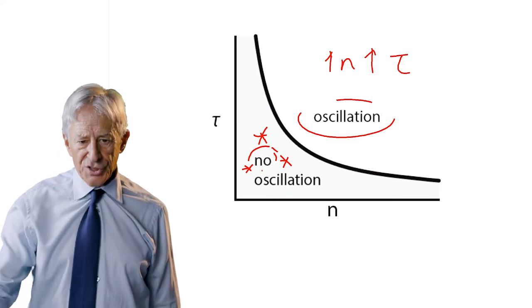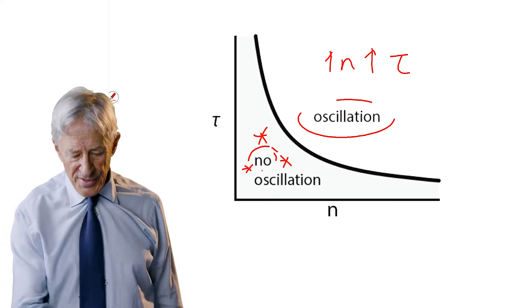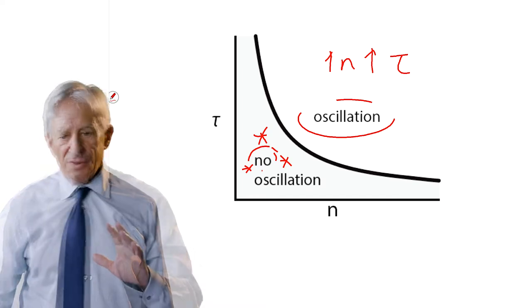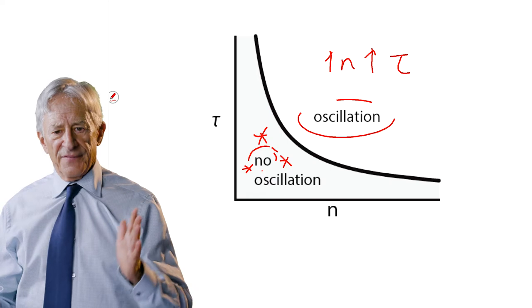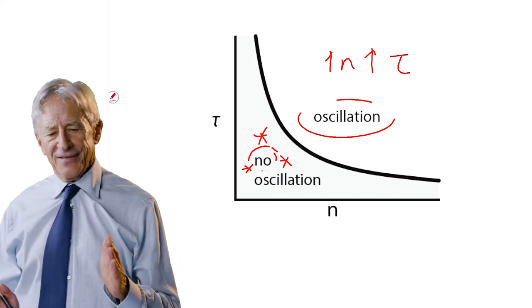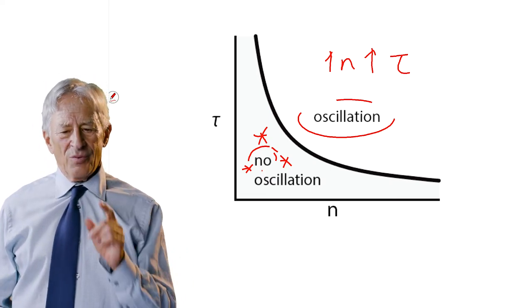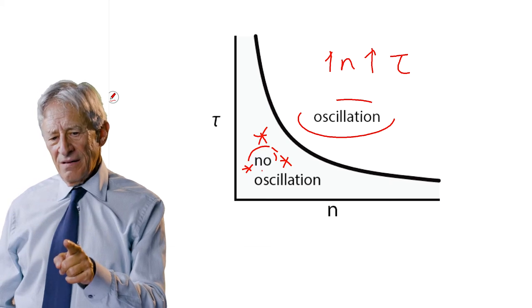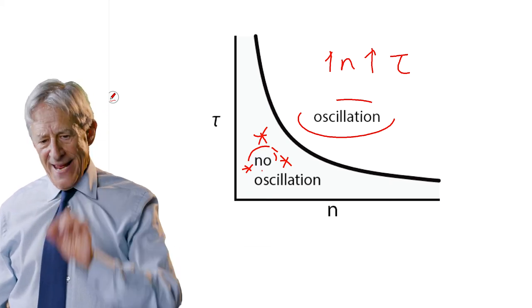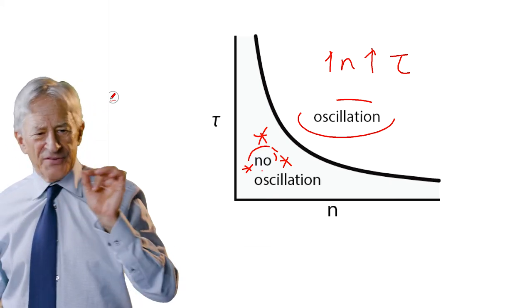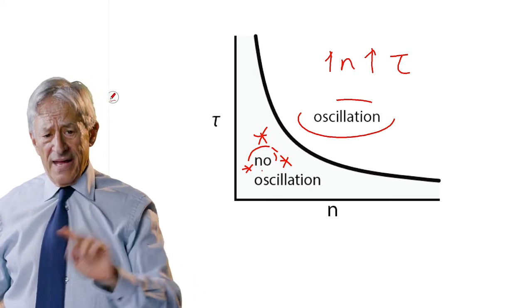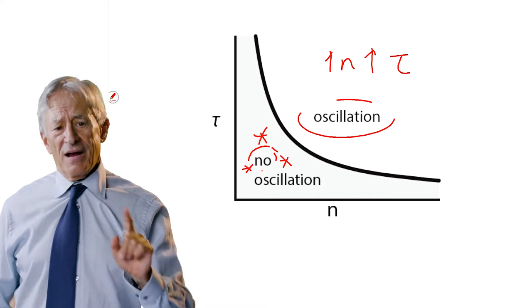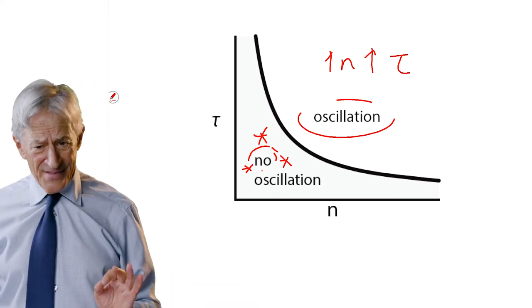But big N and big tau do give you oscillation. And the demarcation zone is that thick black line. So now, with this picture in mind, that we have two different handles on the system. We have the sensitivity, which is modulated by N, and we have the time delay, which is modulated by tau. And both of these can be operating in a given system.